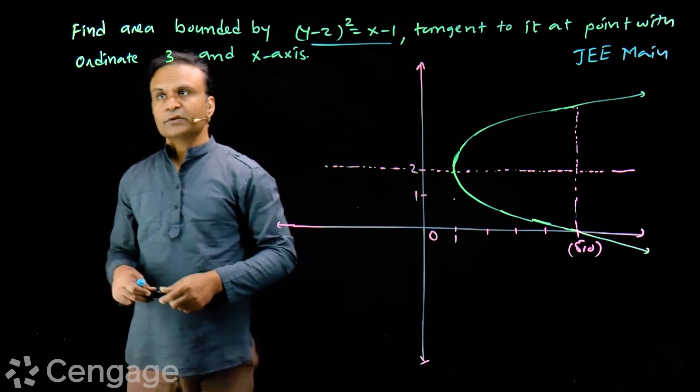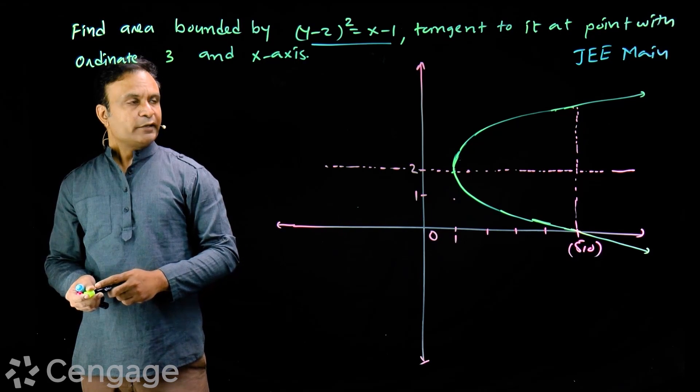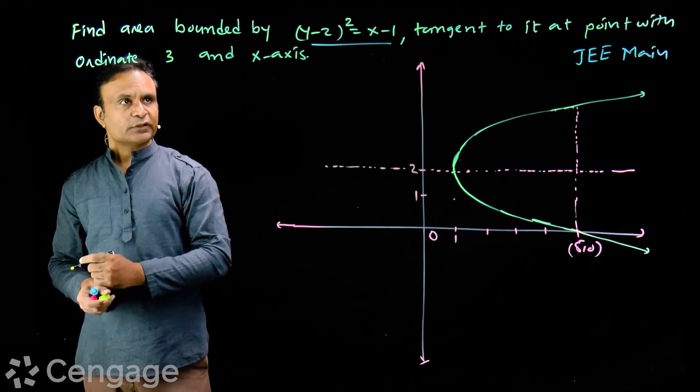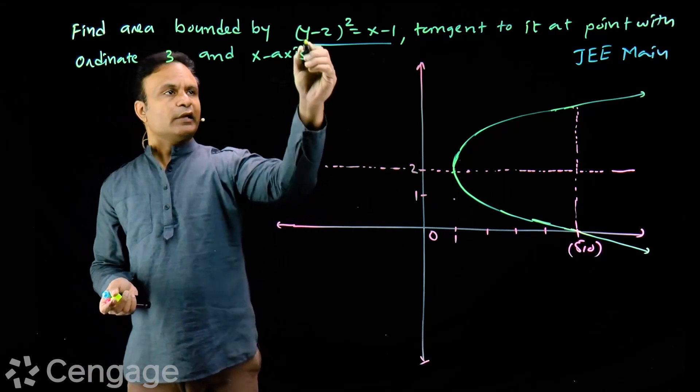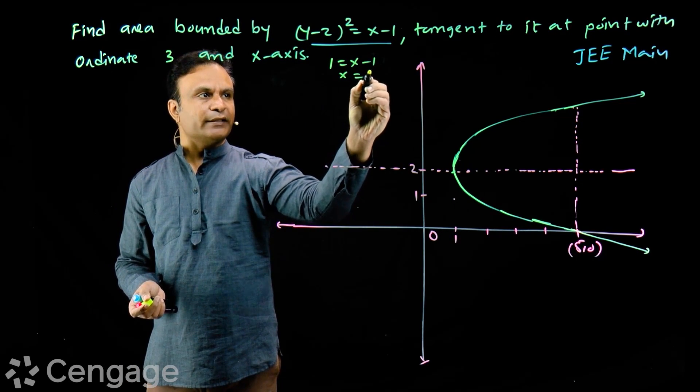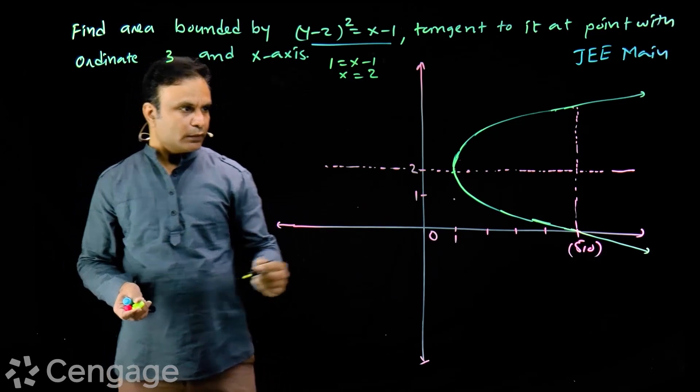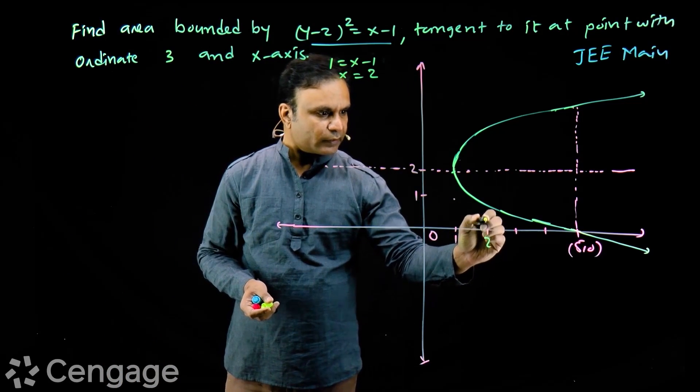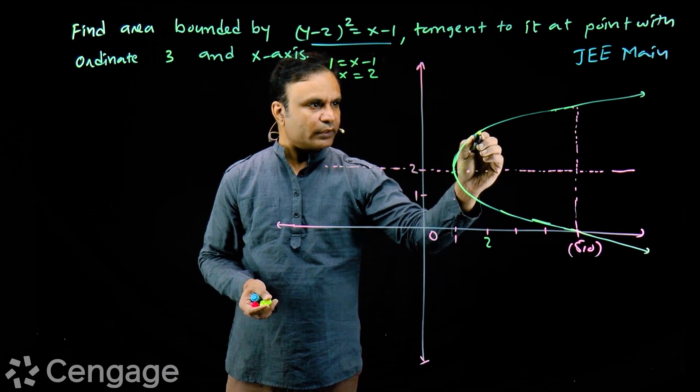Now we are drawing a tangent to this parabola at a point whose ordinate is 3. That means y=3. When I put y=3, I get 1 = x-1, so x=2. So there is a point on the parabola at (2,3).